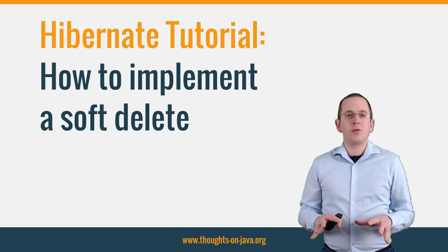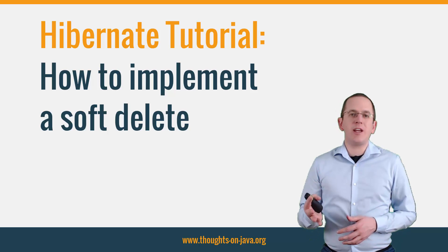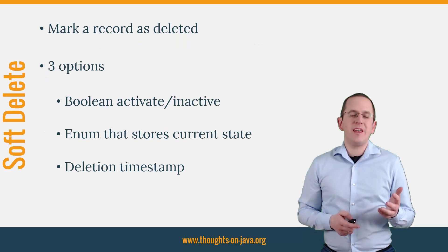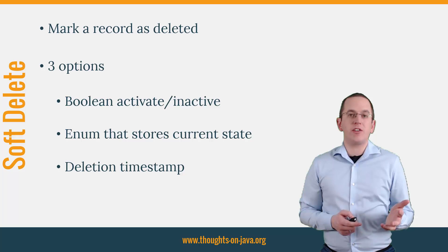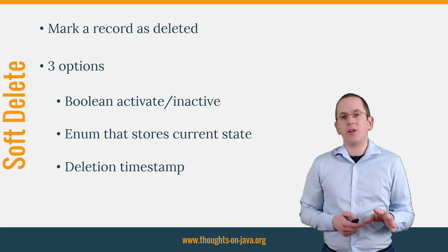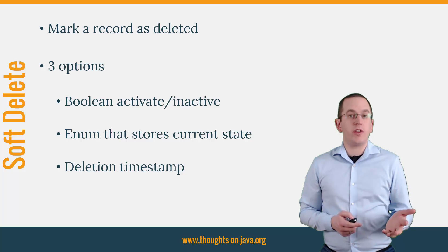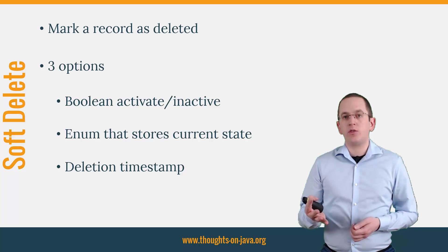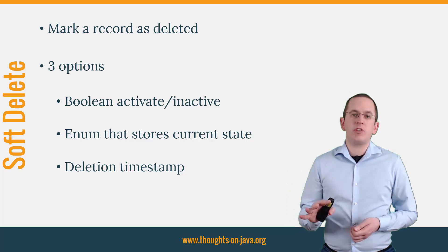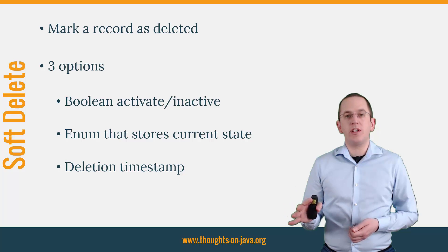But before I do that, let me quickly explain what a soft delete is. A soft delete performs an update to mark a record as deleted instead of removing it from the database table. Common ways to model a soft delete are a boolean that indicates if the record is active or deleted, or an enumerated which models the state of the record, or a timestamp that stores the date and time when the soft delete was performed.